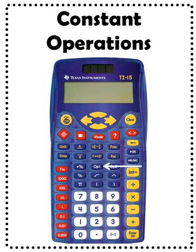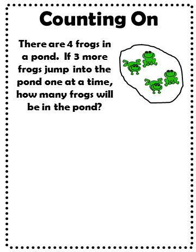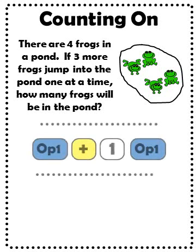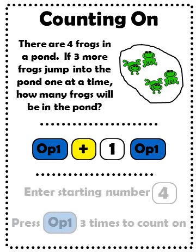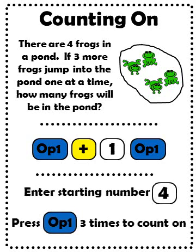The next function is constant operations. For this function, you will need the operation 1 button in the middle of your calculator. You may also want to use the operation 2 button located to the right of this. The first way to use constant operations is for counting on. There are 4 frogs in a pond. If 3 more frogs jump into the pond one at a time, how many frogs will be in the pond? To store counting on by 1s into your calculator, press OPT1, plus 1, and then OPT1 to save this. Because you are starting with the number 4, enter 4. Now press OPT1 three times to count on.